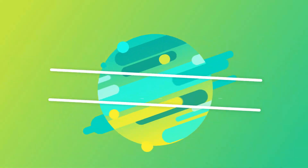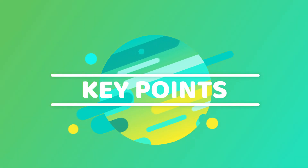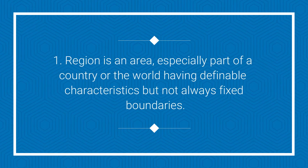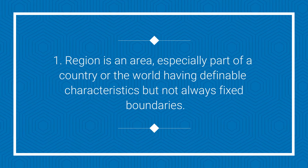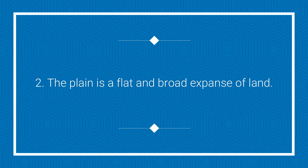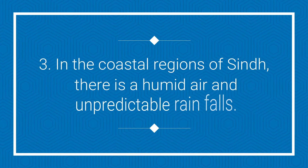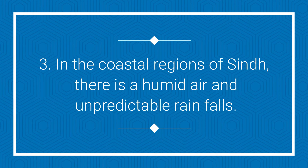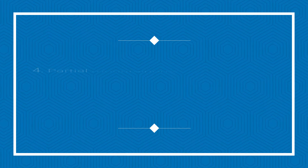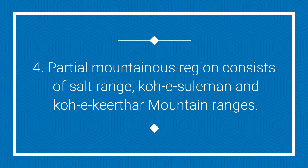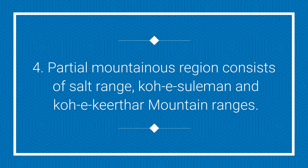Chalain, ab hum is episode ke key points par gaur karte hain. Number one: a region is an area especially part of a country or the world having definable characteristics but not always fixed boundaries. Number two: a plain is a flat and broad expanse of land. Number three: in the coastal regions of Sindh there is humid air and unpredictable rainfalls. Number four: partial mountainous regions consist of Salt Range, Koh-e-Sulaiman and Kirthar mountain ranges.